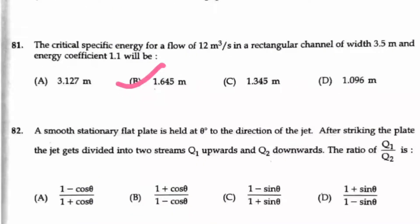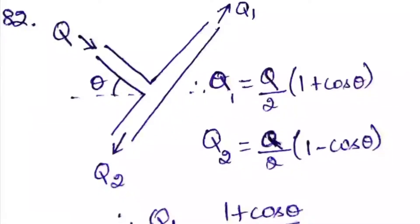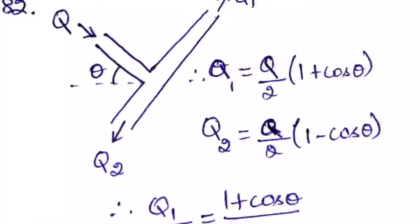Question number 82. A smooth stationary flat plate is held at theta degree to the direction of the jet. After striking the plate, the jet gets divided into two streams Q1 upwards and Q2 downwards. So the ratio of Q1 by Q2 is what? So if you take the diagram like this, the Q is coming and after striking the plate it is divided into Q1 and Q2.